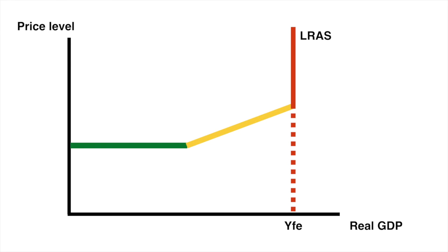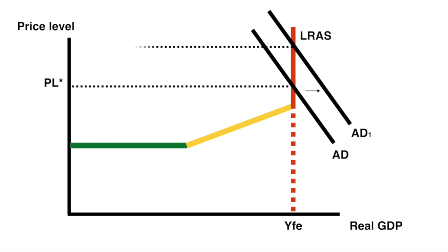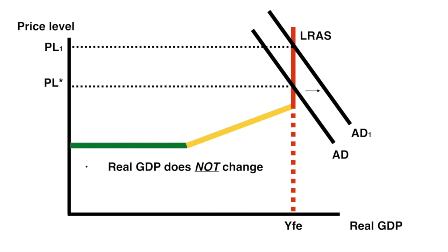Finally, if our economy is operating at full employment and the current price level is PL star, then any increase in aggregate demand will result in only a change in the price level, increasing it from PL star to PL1. Real GDP will not change and employment remains constant. With resources being fully utilized, any greater pressure on them will result only in an increase in the price level.